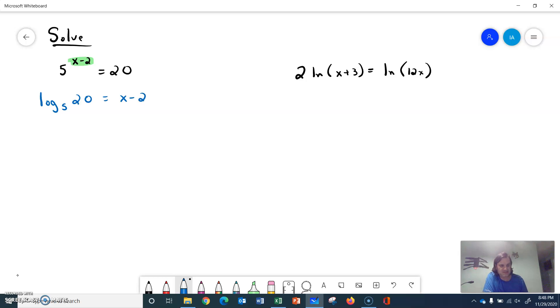Now we can get an exact answer out of this if we like. We can say log base 5 of 20, and then we can say separately from that plus 2. So maybe some parentheses would be good around that logarithm, or maybe putting the plus 2 in front would probably even look better. But that'll be equal to x.